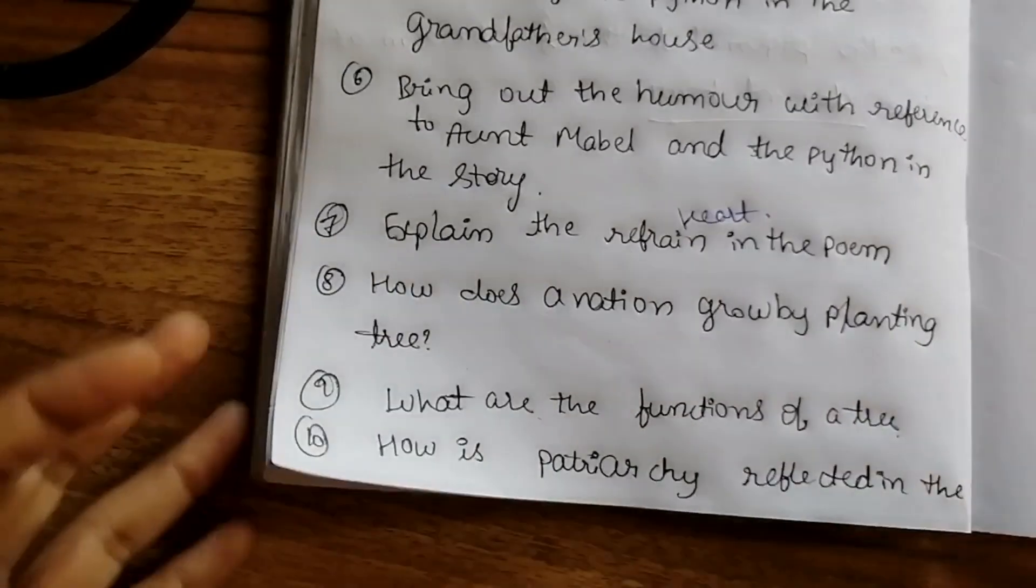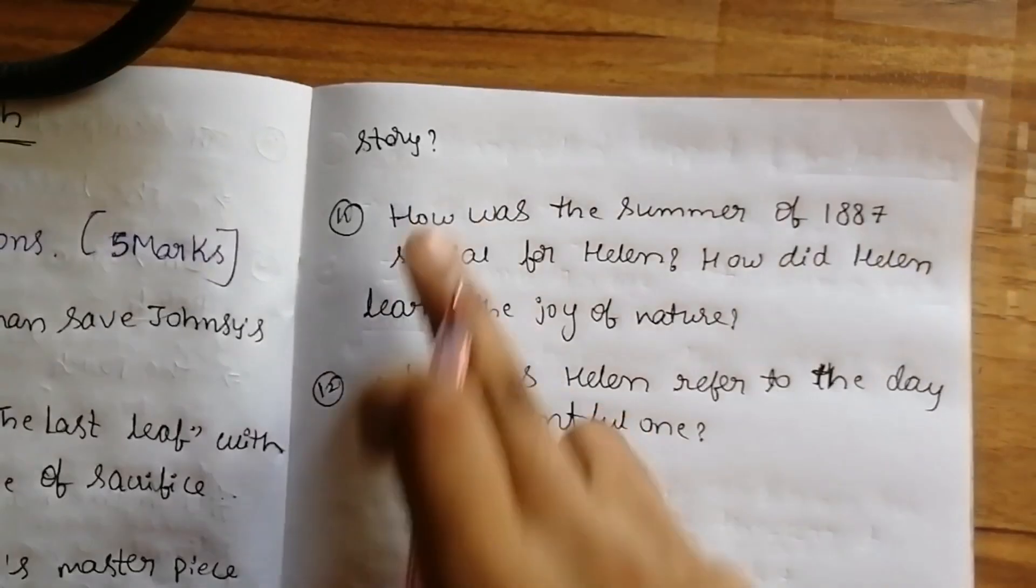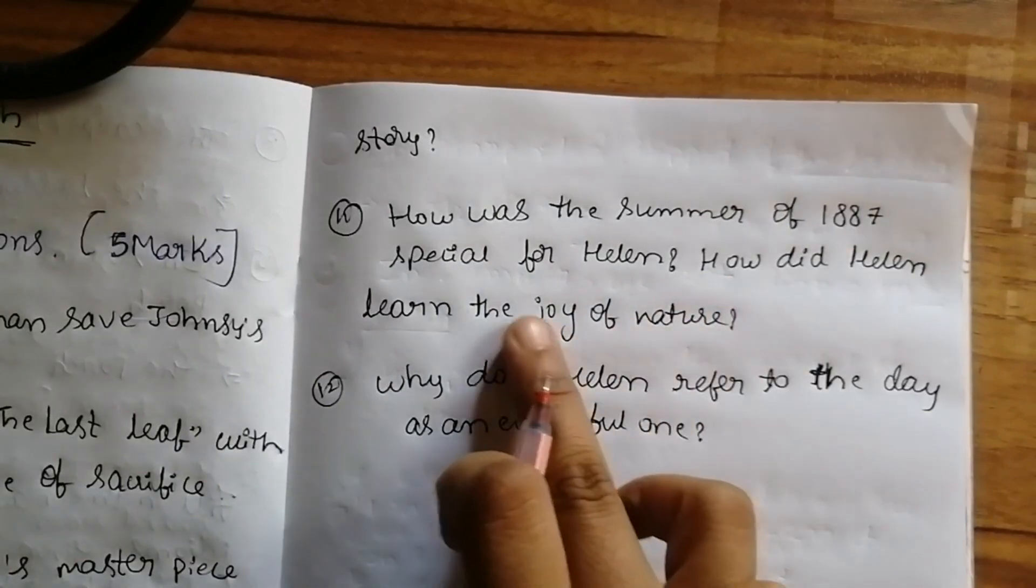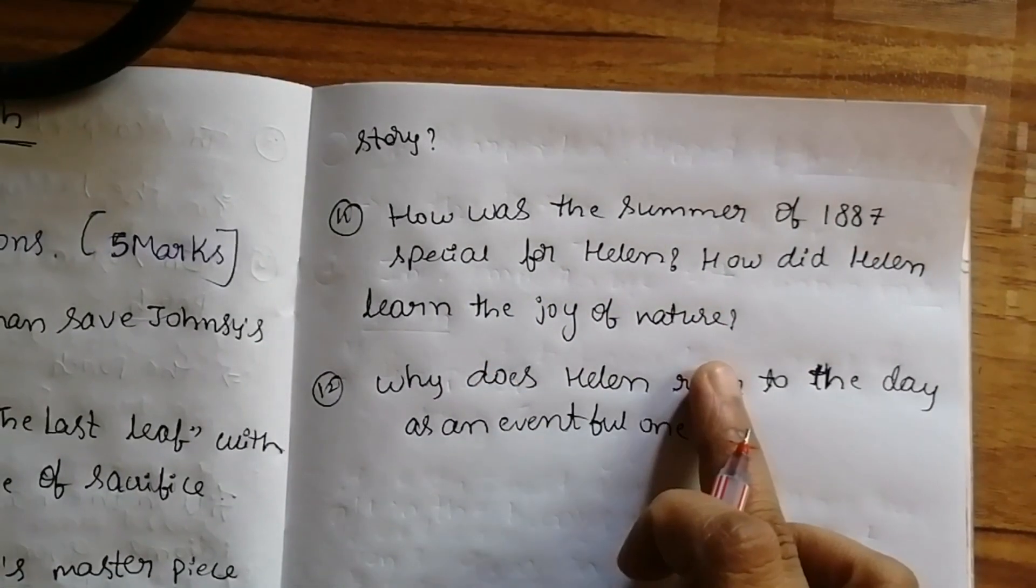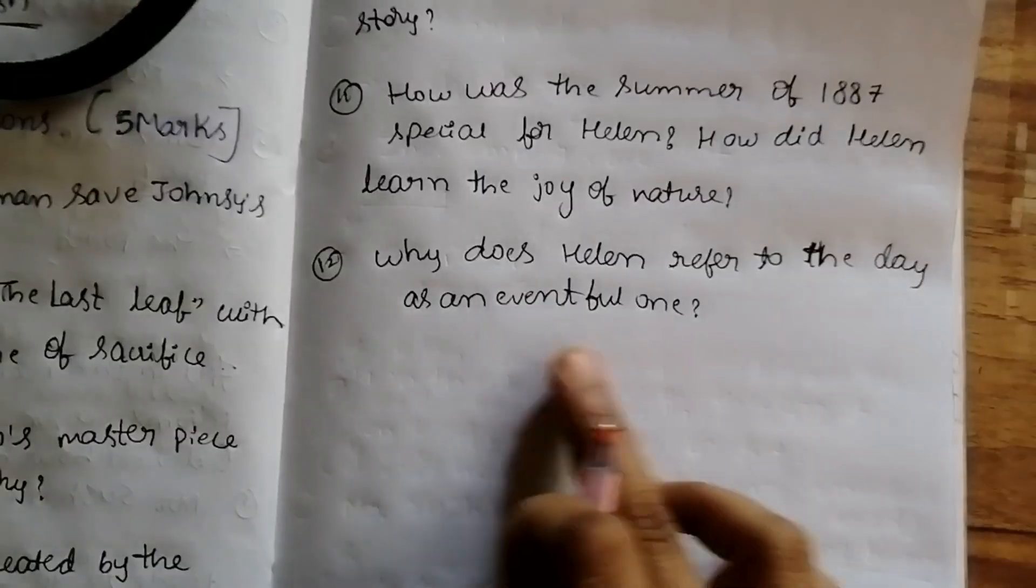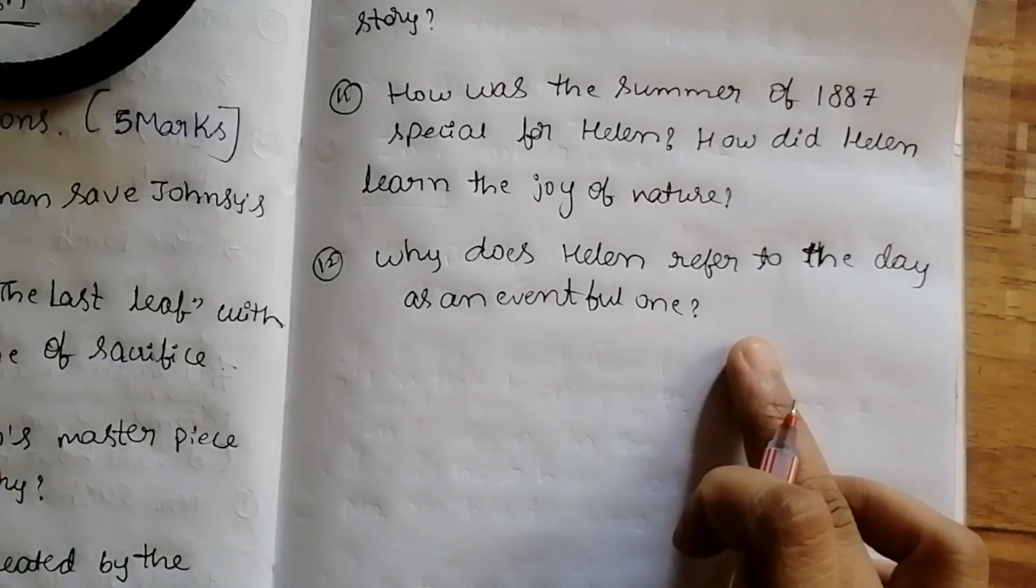How was the summer of 1887 special for Helen? How did Helen learn the joy of nature? What does Helen refer to the day as an eventful one? These are the five most important questions.